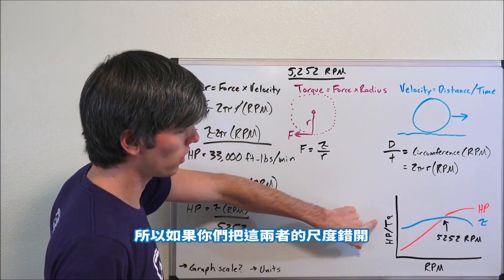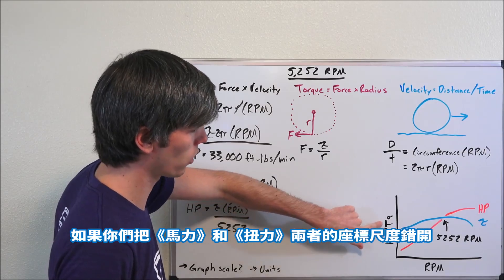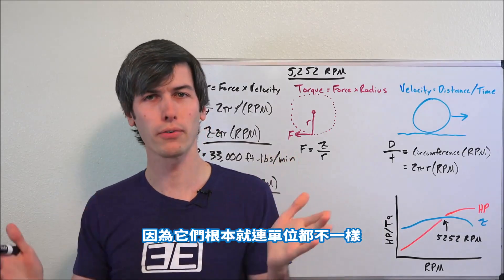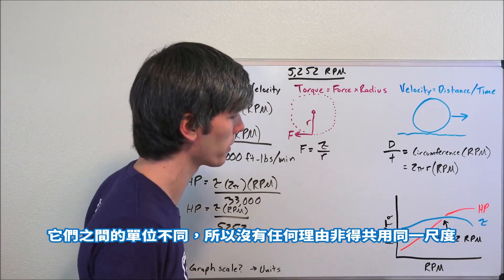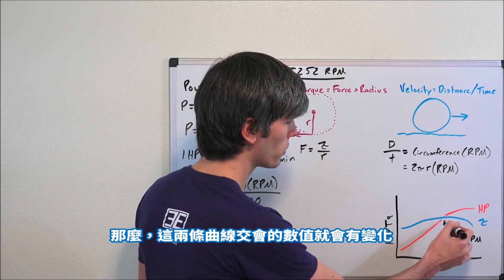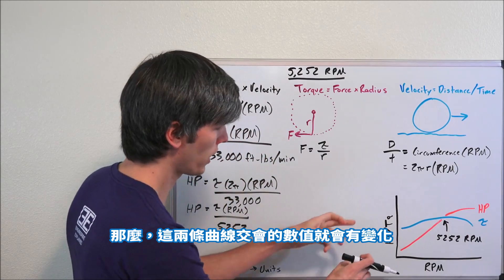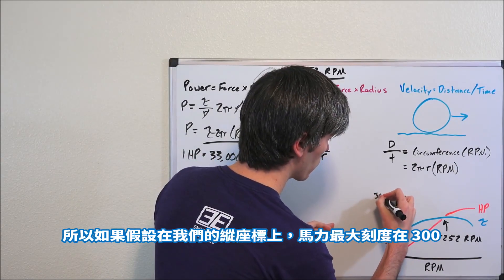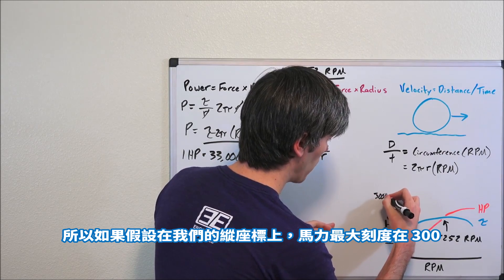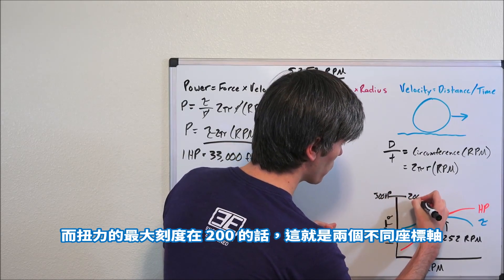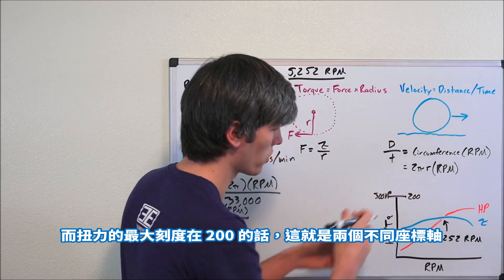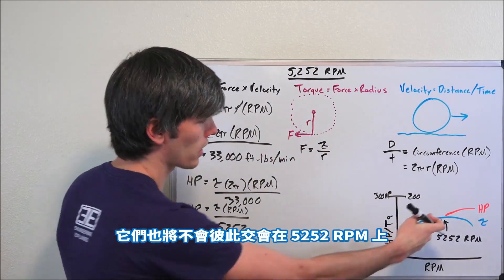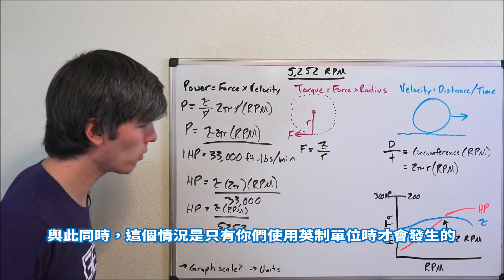So if you were to scale these two differently - if you were to scale horsepower and torque differently, because they're different units, they're not the same unit, so there's no reason why they have to be on the same scale - then this number would change, where they intersect would change. So if, say for example, on our scale here this was 300 horsepower but it was 200 torque, because each one will have its own axis, then they're not going to intersect at that 5,252. Likewise, this only happens if you're using imperial units.